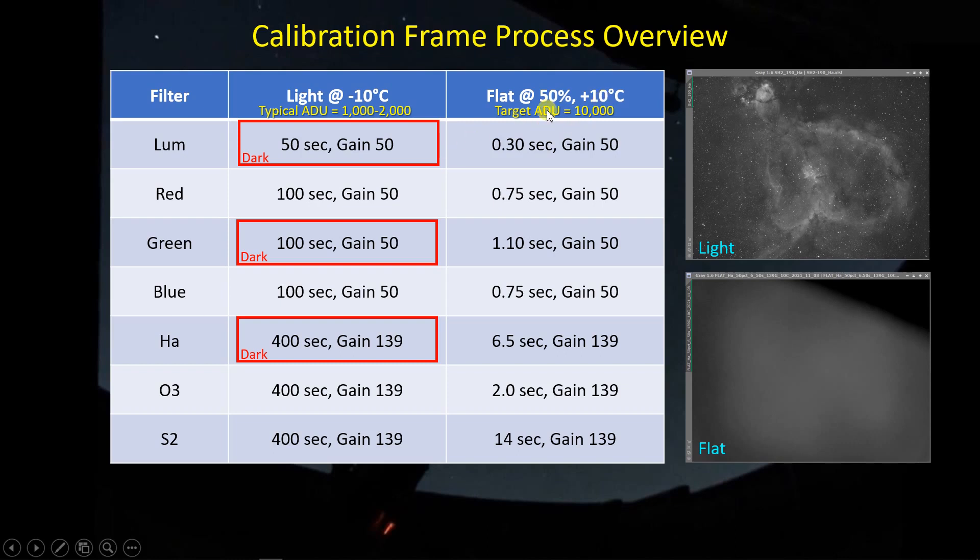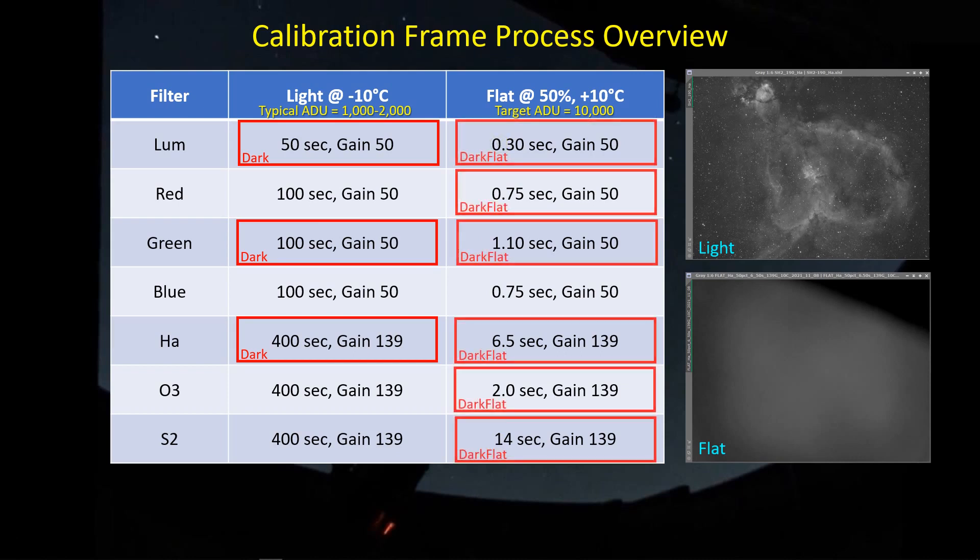And then because I'm targeting an ADU level, I just find the different exposure settings given the appropriate gain that gives me roughly that 10,000 ADU. And you can see there's quite a bit of variation all the way from 14 seconds for the sulfur 2 filter down to 0.3 seconds for the luminance filter.